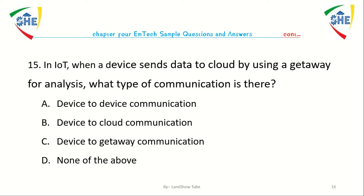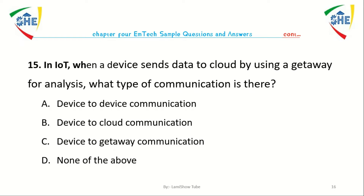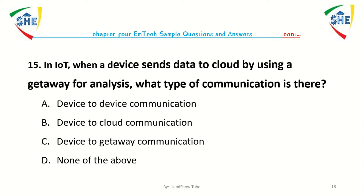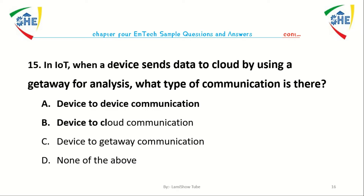Question number fifteen: In IoT, when the device sends data to the cloud by using the gateway for the purpose of analysis, what type of communication is that? A. Device to device communication, B. Device to cloud communication, C. Device to gateway communication, D. None of the above.